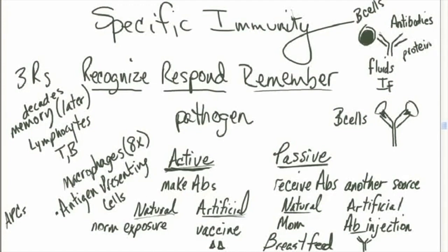A pathogen is any disease-causing agent. Specific immunity involves the processes that recognize, respond, and remember pathogens — or foreign invaders, harmful substances, anything that has the ability to cause a disease. The cells involved in specific immunity are lymphocytes and macrophages, primarily.